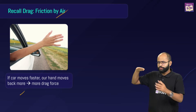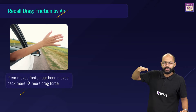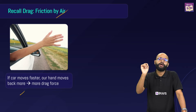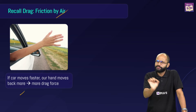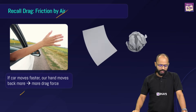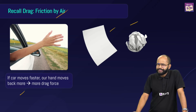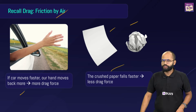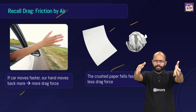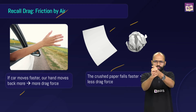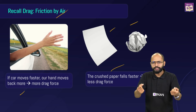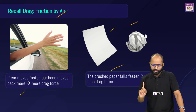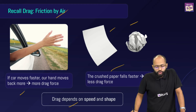To experience drag, when a car is moving fast and you take your hand out, you feel air forcing your hand backwards — that's more drag. If you turn your hand sideways it glides easily — less drag. Another example: a crushed paper falls faster than a flat A4 sheet. The mass is the same but the shape differs, so drag is less when crushed. From this, drag depends on speed and shape.